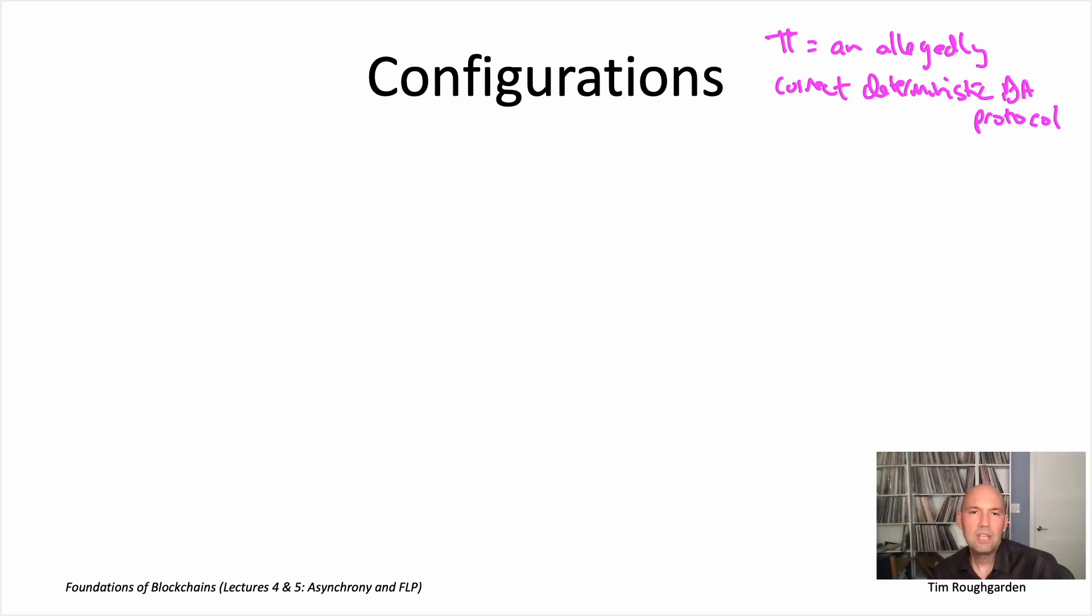So that brings me to the definition of a configuration. A configuration is just a snapshot of what's happening in the protocol at a given moment in time. It's sufficient information so that you can restart the protocol from that point if you want to. So what are all the things we need to keep track of?